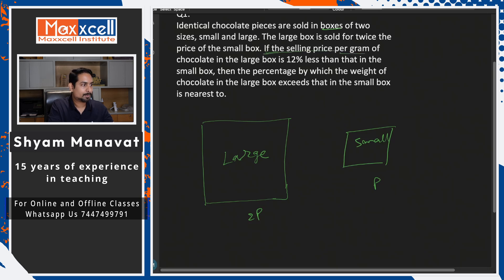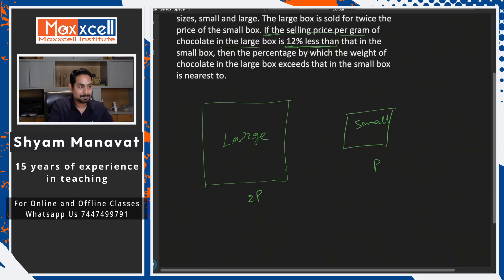If the selling price per gram of chocolate of large box is 12% less, so the selling price per gram, per gram there is a difference. Why? Because large size you are selling in the larger packets, that means you can give some discount to the customer. That is what they mean, 12% less than the smaller one.